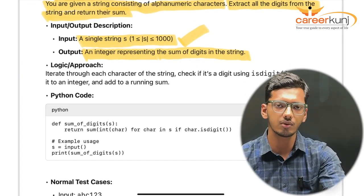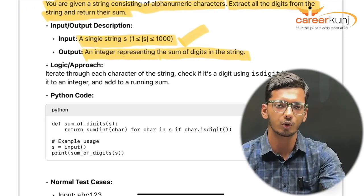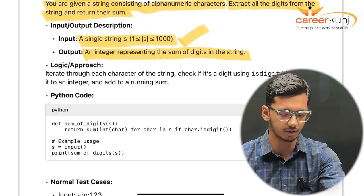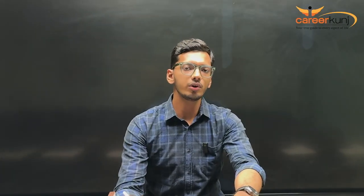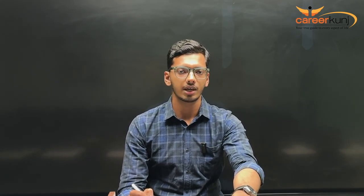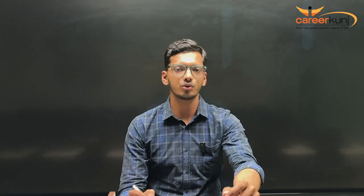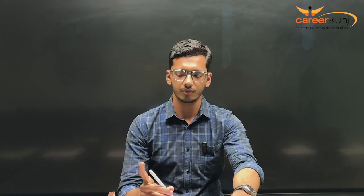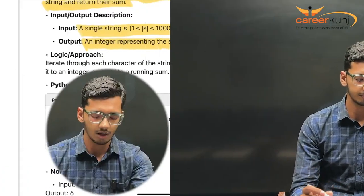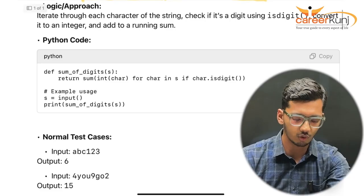Before we start coding, let's look at the approach. What we will do is go through each character and check if it is a digit or not. If it is a number, we will include it in our sum. On screen you can see the Python code for this.